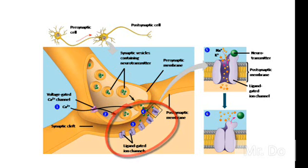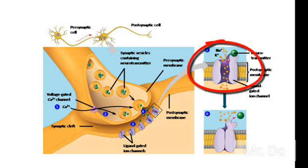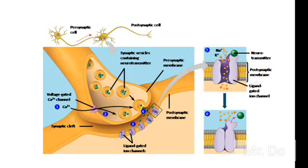Before, we learned that when the gate channel opened, sodium and potassium were influxed and effluxed. But the question was — we never learned how the channel opens. Now we know: the channel is opened by the neurotransmitter from the previous neuron. As the gates open, the action potential is being generated at the dendrite.